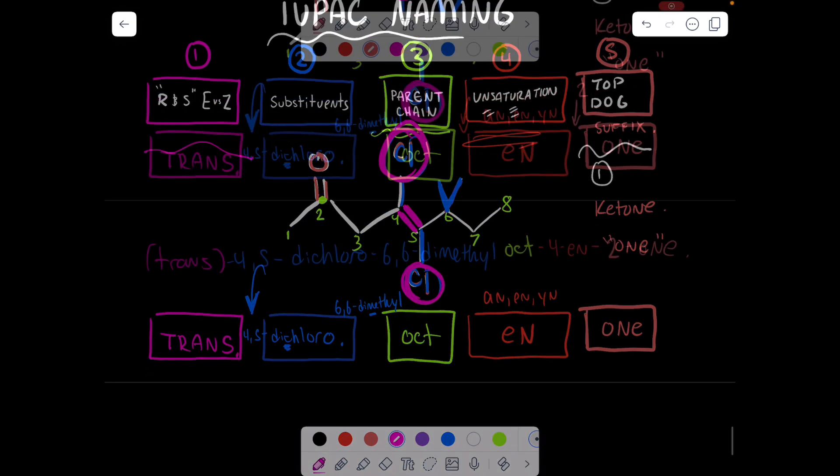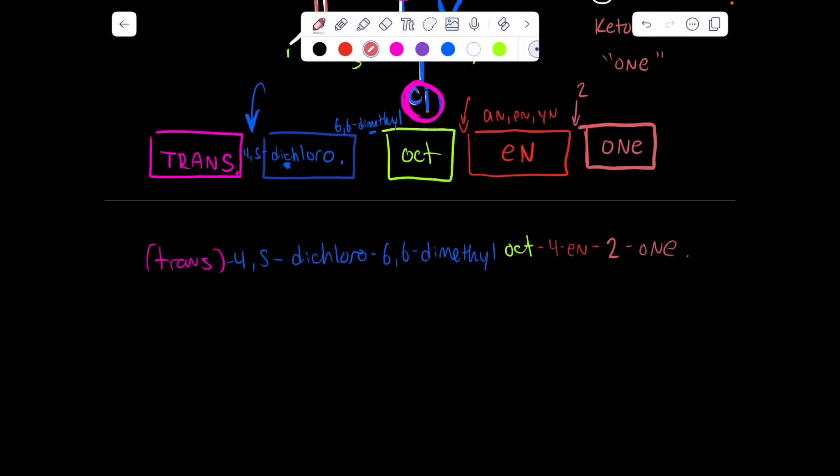Then we have our name. If we put this all together, we would say trans, and then the substituents, which we labeled in alphabetical order: 4,5-dichloro-6,6-dimethyl. And then we had our parent number, oct. And then we had to denote the number that the double bond started on.